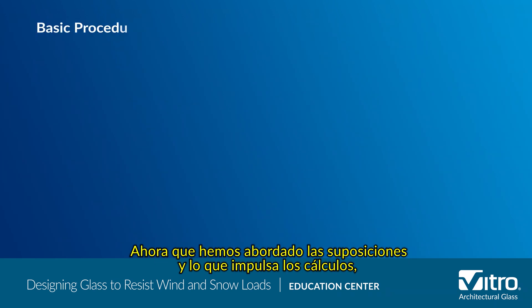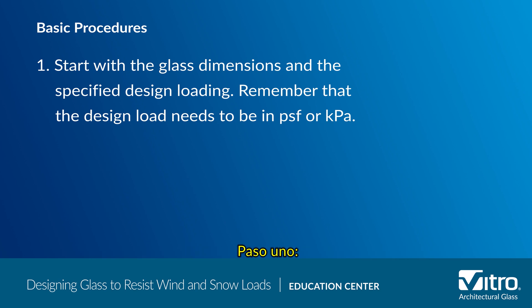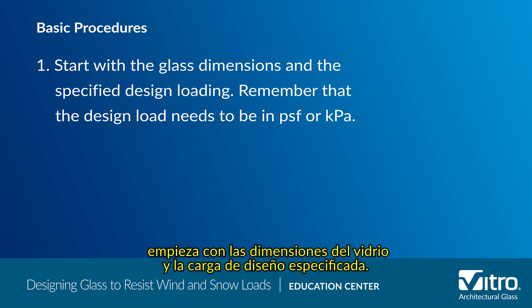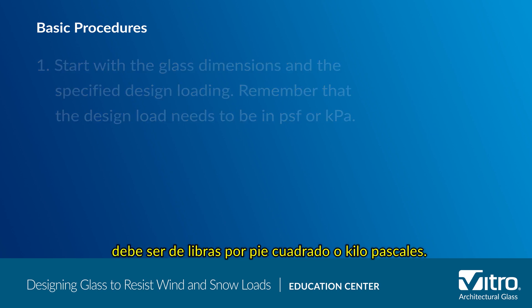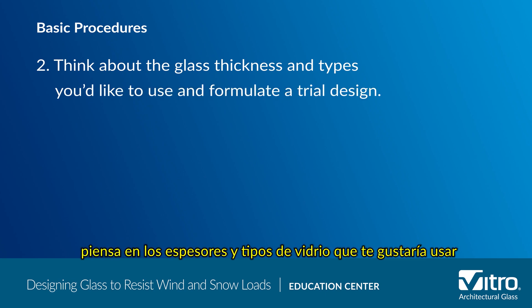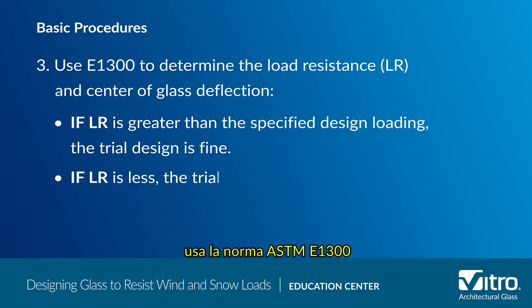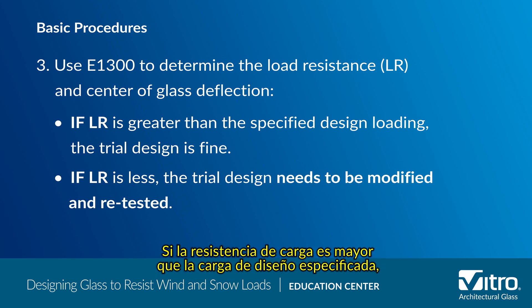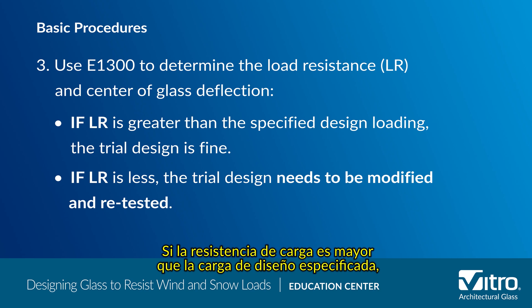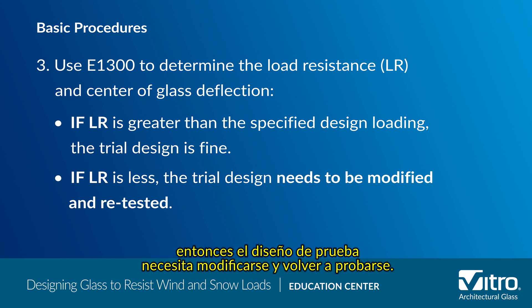Now that we've covered the assumptions and what drives the calculations, we'll go through the basic design procedure. Step one: start with the glass dimensions and the specified design loading — remember that the design load needs to be in pounds per square foot or kilopascals. Step two: think about the glass thicknesses and types you'd like to use and formulate a trial design. Step three: use ASTM E-1300 to determine the load resistance and center of glass deflection. If the load resistance is greater than the specified design loading, your trial design is fine and you can proceed. If the load resistance is less than the specified design loading, the trial design needs to be modified and retested.